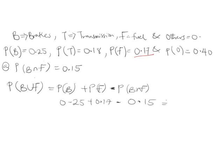So 0.25 plus 0.17 minus 0.15 equals 0.27 — you can verify this on your calculator. Therefore, the probability that the defect is either from the braking system or the fueling system is 0.27. That concludes part (a); now let's move to part (b).